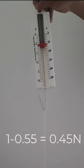Now as we can see, the weight of the glass slab has reduced and it has reduced by 0.45 newtons. This means there must be a force of 0.45 newtons acting in the upward direction on the glass slab.